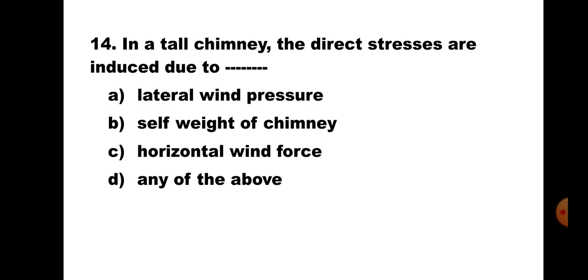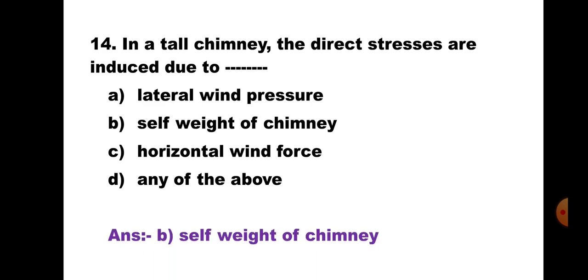Question number 14: In a tall chimney, the direct stresses are induced due to A. Lateral wind pressure, B. Self weight of chimney, C. Horizontal wind force, D. Any of the above. A tall chimney is a structure provided in industry to release gases at high altitude. It is a tall structure with higher weight, and the direct stresses are induced due to its self weight. Hence, the correct answer is B. Self weight of chimney.